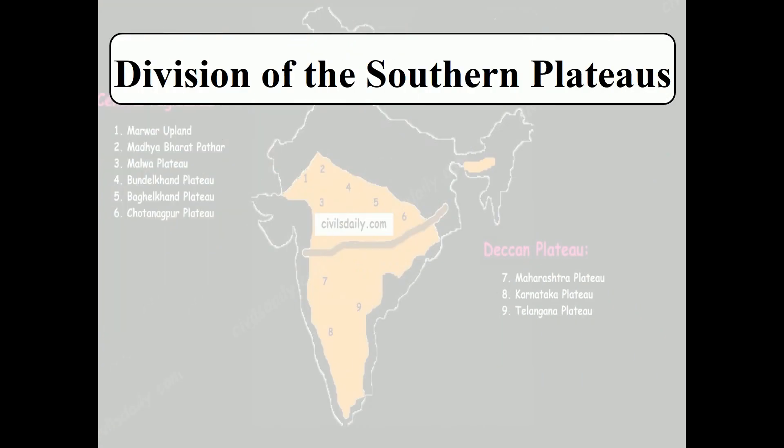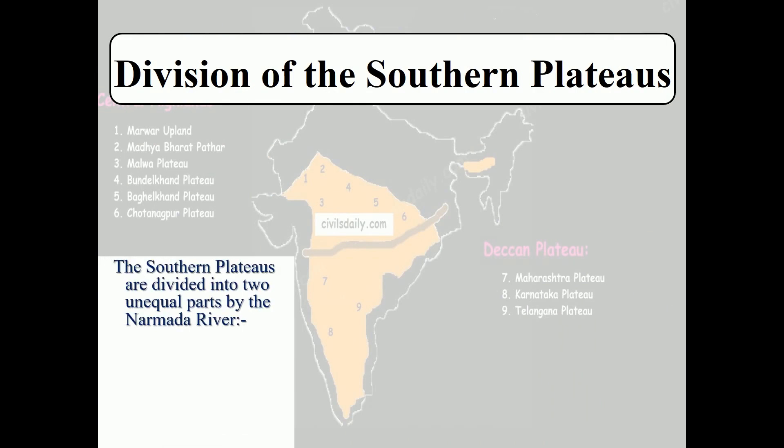The southern plateaus are divided into two unequal parts by the Narmada River: the Central Highlands and the Deccan Plateau.